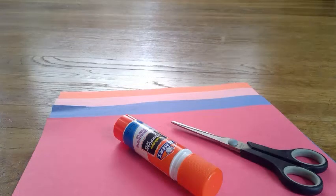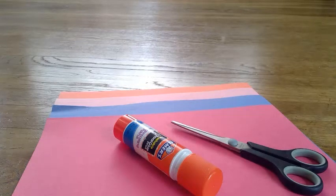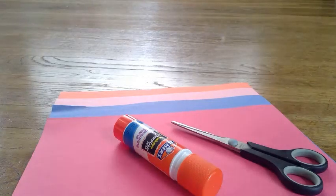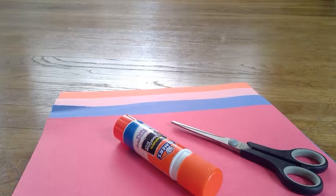For today's art project, we're going to make a miniature foldable house. You need four pieces of paper. They can be the same color or different colors. I'm choosing different colors today. A glue stick and some scissors.